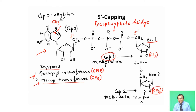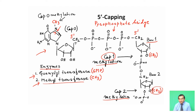Subsequent methylation occurs at base-1 and base-2 positions, called cap-1 methylation and cap-2 methylation. In both cases, methylation occurs at the 2' position of the pentose sugar. This completes the 5' cap modification of the RNA.